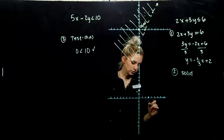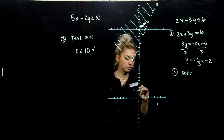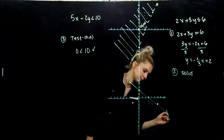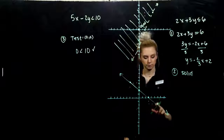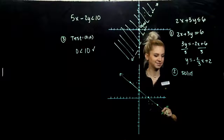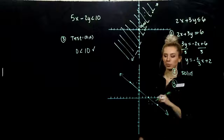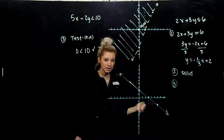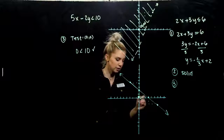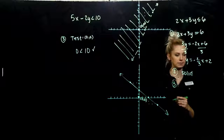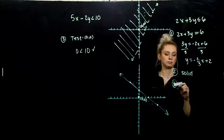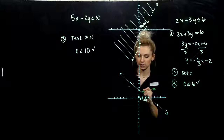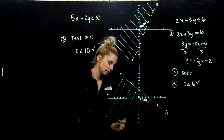Let's graph that line. It goes through (0, 2). From there, move according to the slope: down 2, over 3. Or, going the other direction: up 2, back 3. The line is solid — your straight edge will help. Now we want to determine which half plane is part of our solution set. The easy test point is (0, 0) since it's not on the boundary. Plugging into the original inequality gives 0 less than or equal to 6, which is true. So we need to include the lower half plane.